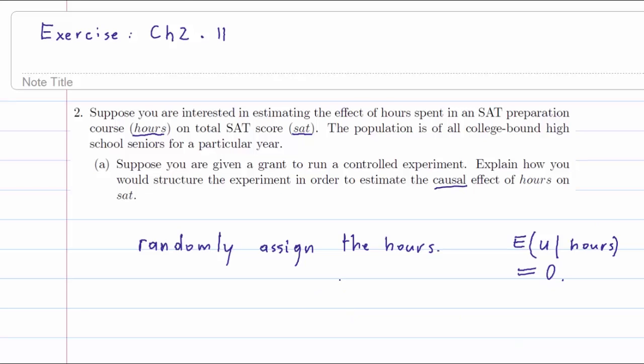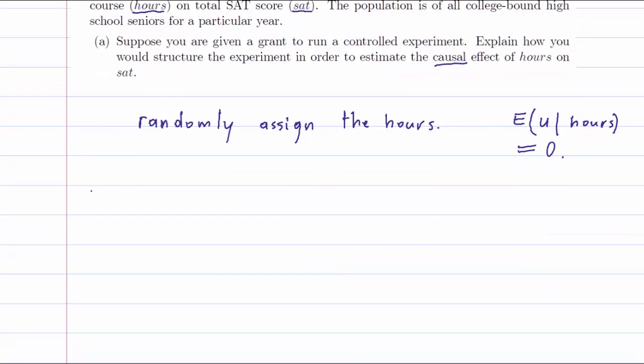And if we want accuracy in the estimation, something important must happen: we need as much variation as possible in hours.